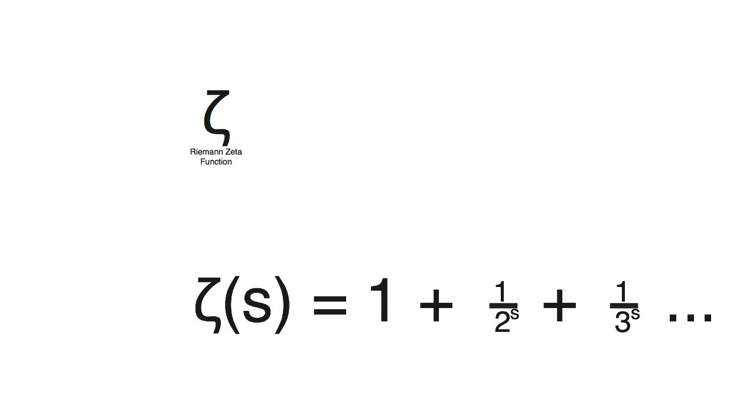Now, in the video on the Riemann Hypothesis, I used s equals 2 as an example. Well, the reason for that was because it's actually the smallest whole number value that we can set a value to. The reason I didn't start with 1 is because it's undefined.